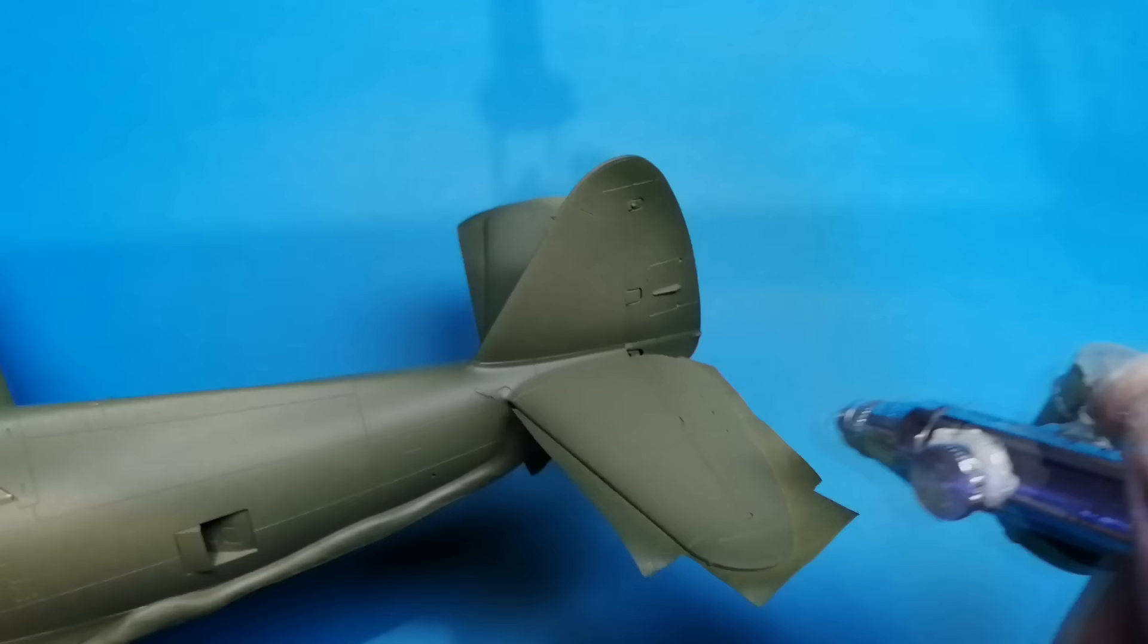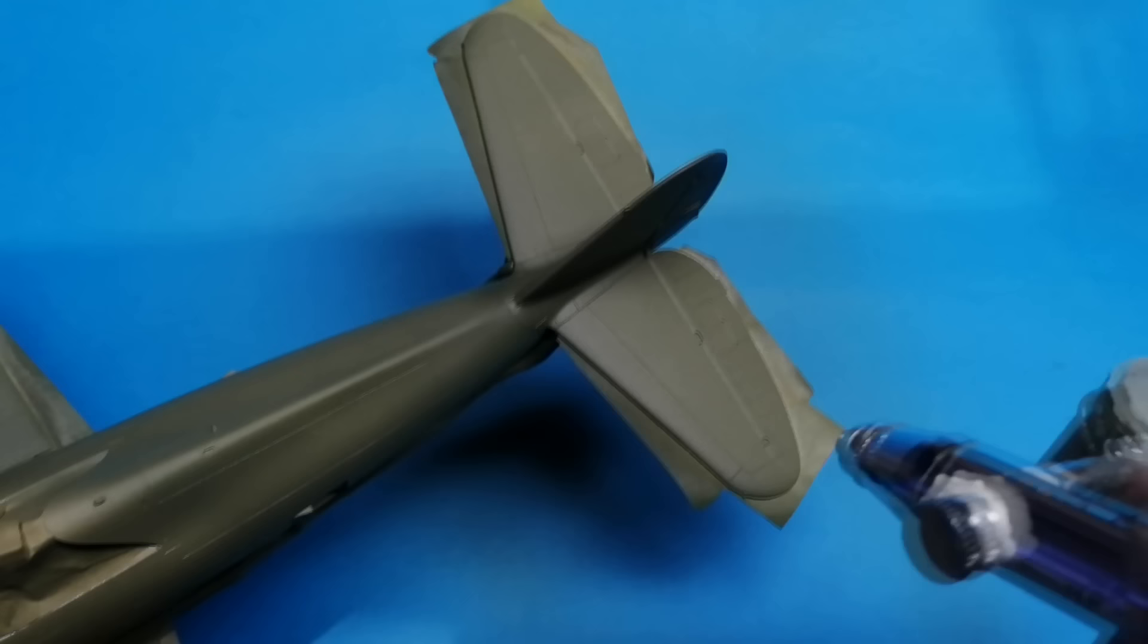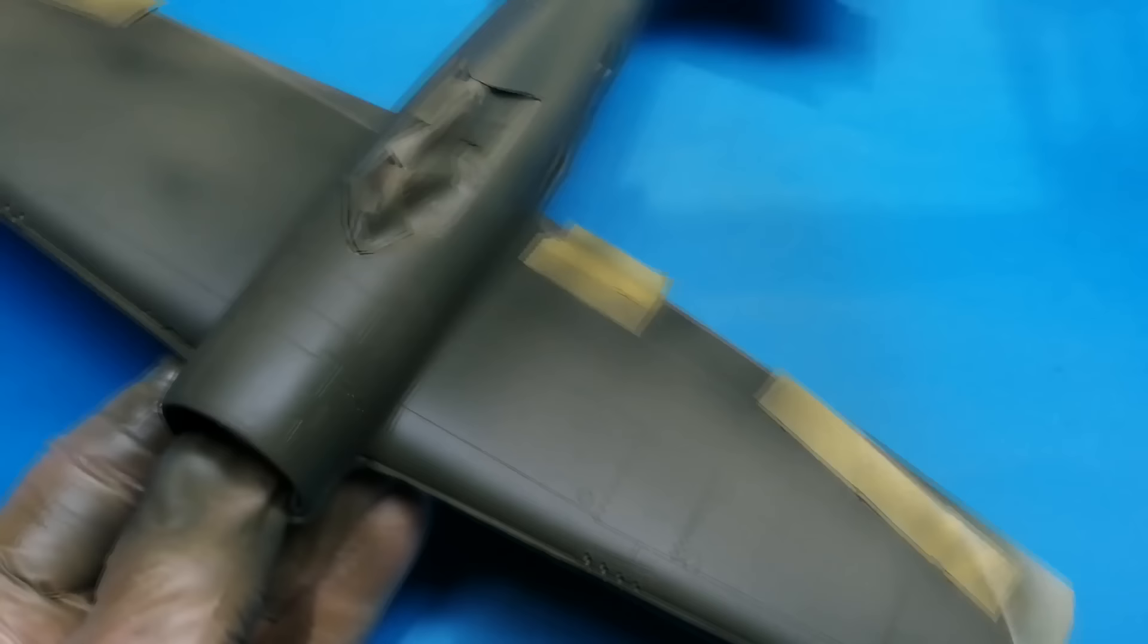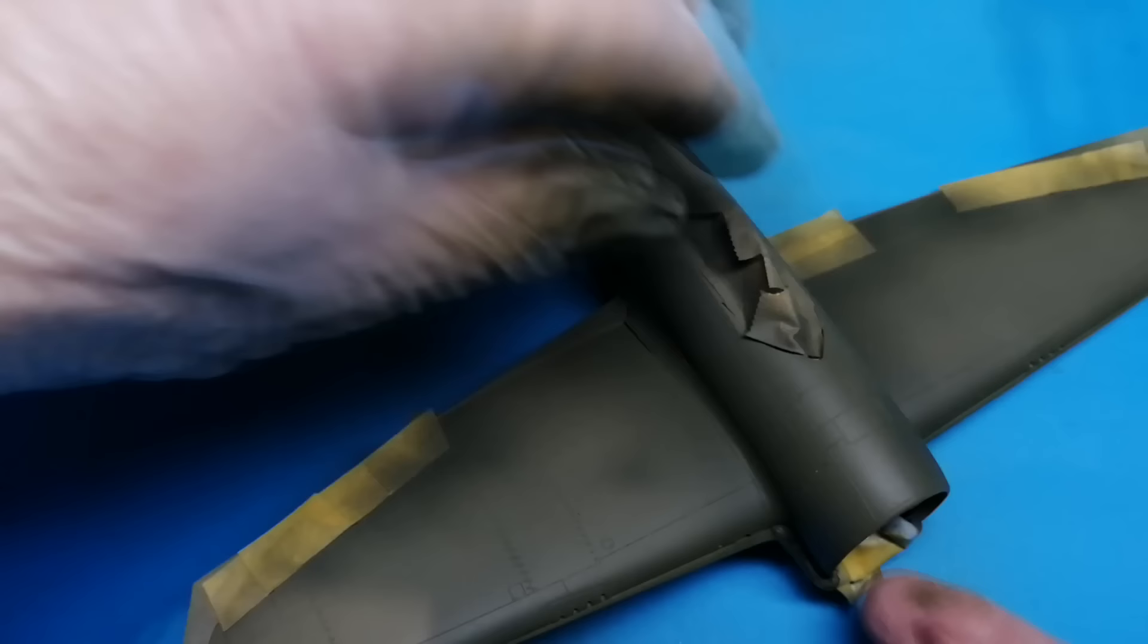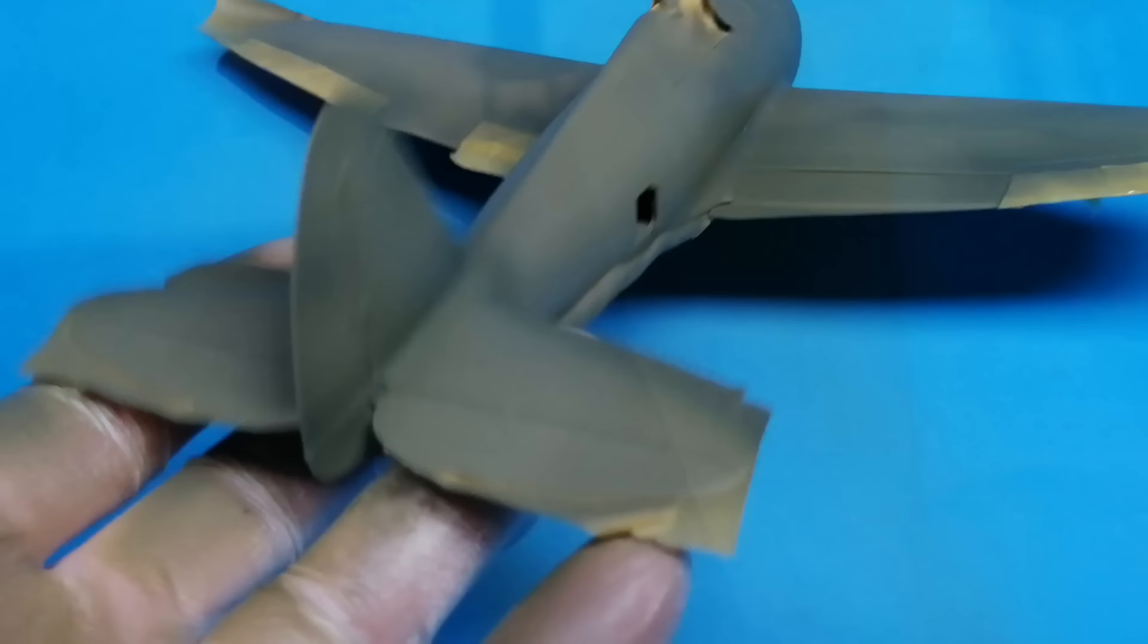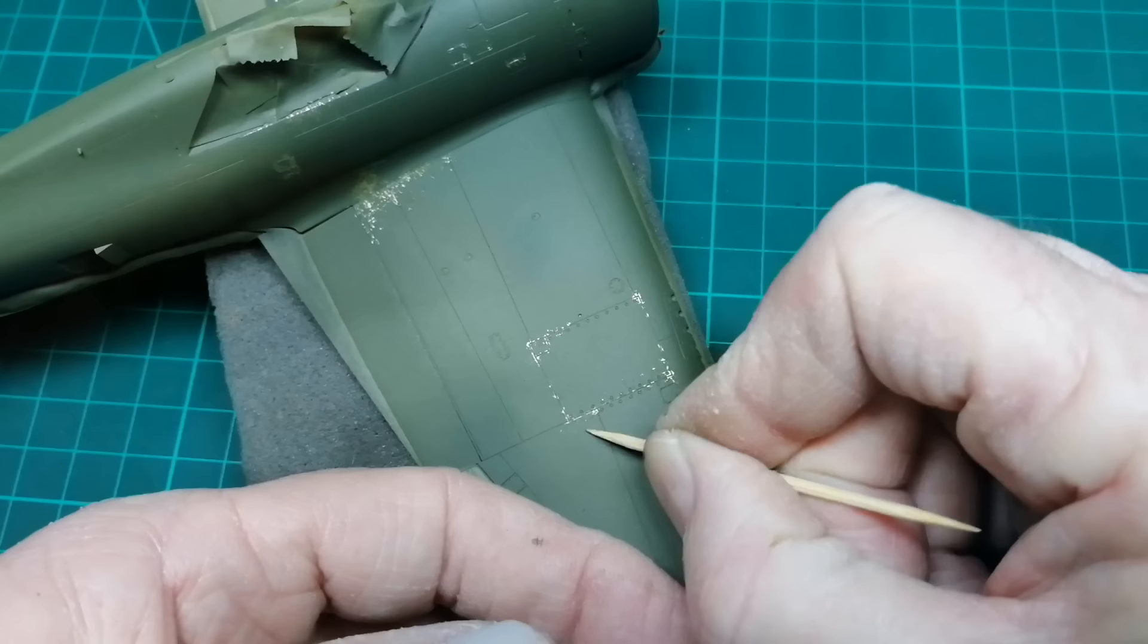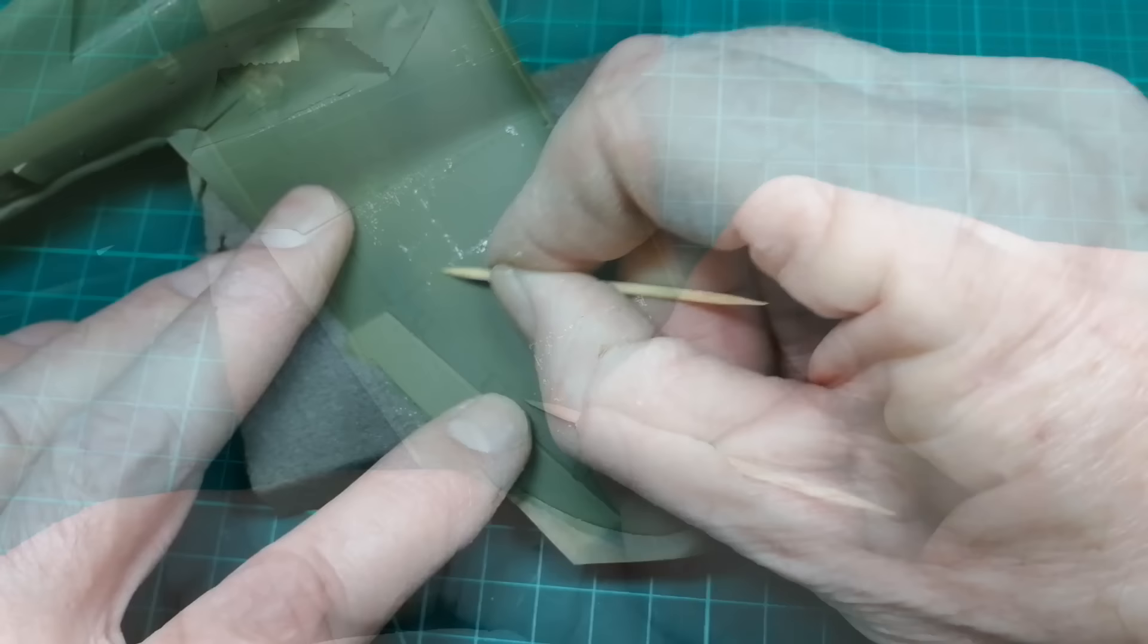A darker version of that colour is added willy nilly but mainly around the edges. When I come to wet sand this paint surface it will blend in a lot better. Now before these two greens have time to thoroughly dry, I'm just going to scratch the surface to reveal the silver underneath. Just for some wear and tear.